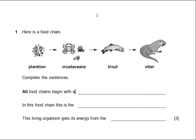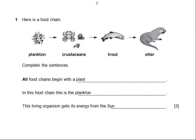Number one says: all food chains begin with a... We know that food chains and food webs start with a plant, so you have to write down 'a plant.' You can also write 'a producer' — both are correct, but write only one answer. Number two: in this food chain, the plankton is the plant or the producer. Number three: this living organism gets its energy from the sun. We know that plants get their energy from the sun to make their own food.